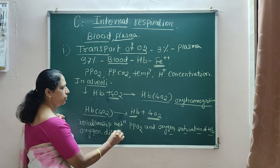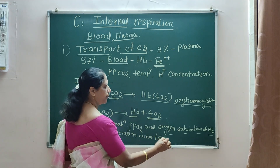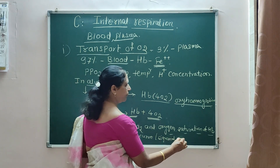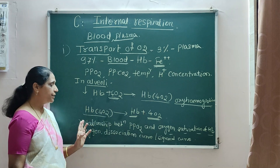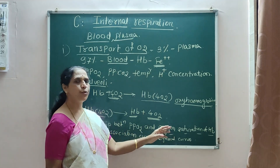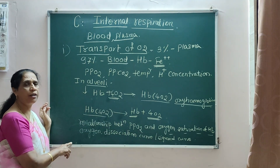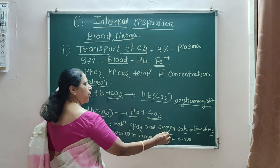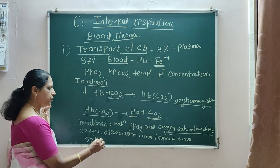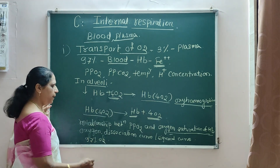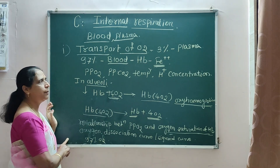This oxygen dissociation curve is also called the sigmoid curve. It shows the relationship between pO2 and oxygen saturation of Hb. 100% oxyhemoglobin formation is very rare; 97% of oxygen combines with hemoglobin, and the remaining cannot form oxyhemoglobin because conditions are not favorable.